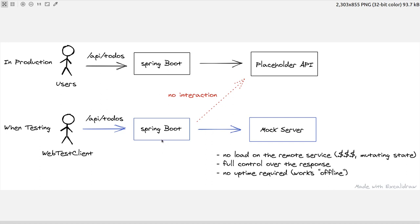When we want to write integration tests for our Spring Boot application and verify that our API is working as expected across different scenarios, we shouldn't reach out to the Placeholder API for various reasons. One big reason is that we create additional load on the remote service, and in case we have to pay for each API invocation, we also add cost to our monthly bill.